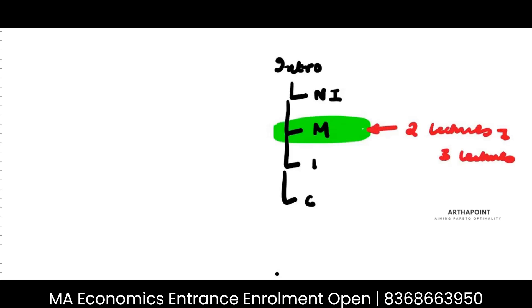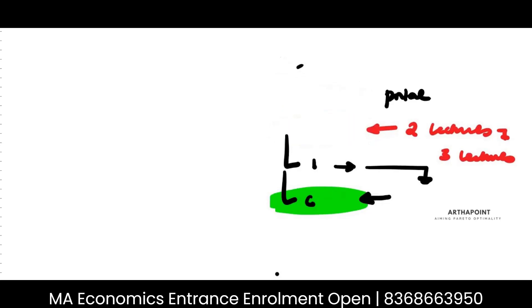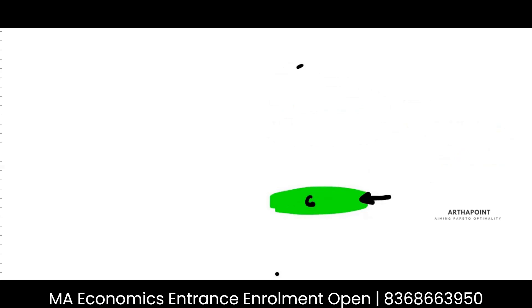Then we will begin with closed economy. In the meanwhile, the national income accounting has already been uploaded in the portal. We will take that next, and at last we will do inflation, because it is a very small part and mostly survey — we don't get many questions out of survey. So the aim is to start with unit two first, hop on to unit four, and then do the remaining of unit three.